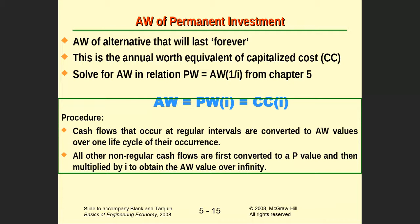Specifically, we are going to focus on this example. It is a very important example, similar to the capitalized cost that we covered in Chapter 5. It is repeated here in Chapter 6 because of the relation between the annual and the present in the permanent investment case, when we have a life cycle of forever — all the keywords that refer to infinity or permanent investments.